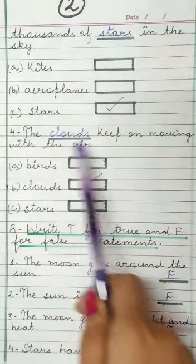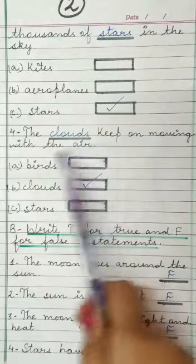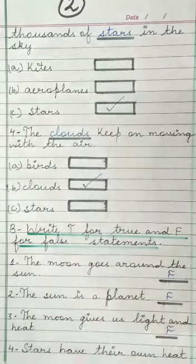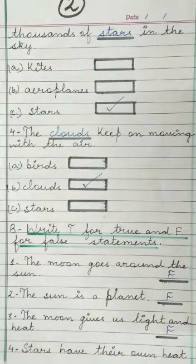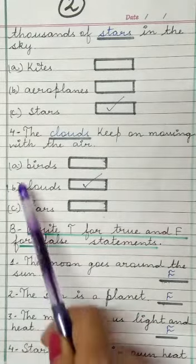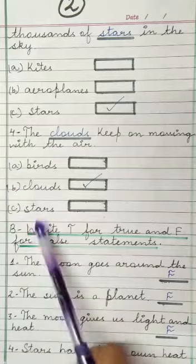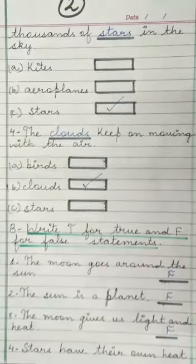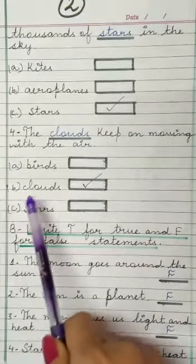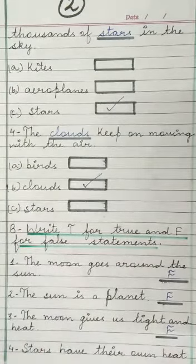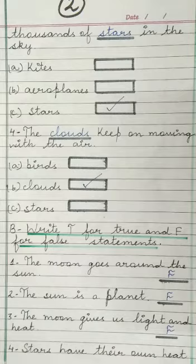Next question: the dash keeps on moving with the air. So the answer is Clouds. Clouds means white or grey structures in the sky which cause rain or snowfall.